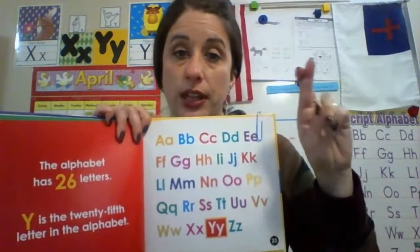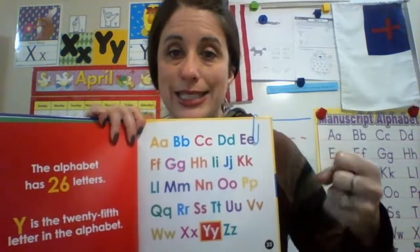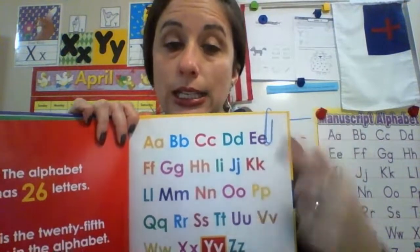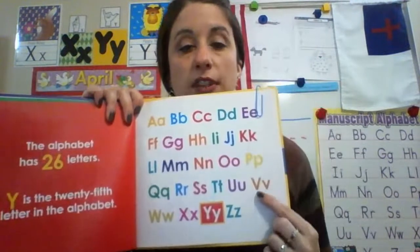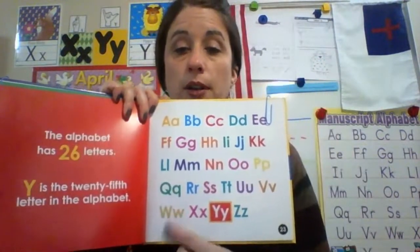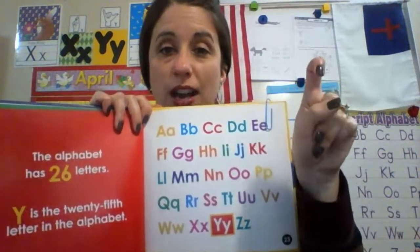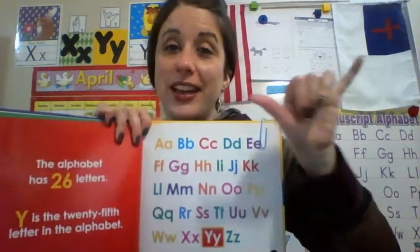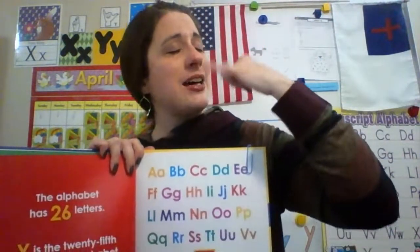R — the letter R, rrr rrr rrr. S — the letter S, sss sss sss. T — the letter T, tuh tuh tuh. U — the letter U, uh uh uh. V — the letter V, vvv vvv vvv. W — the letter W, wuh wuh wuh. X — the letter X, ks ks ks. We learned that one yesterday. And today is Y — the letter Y, yuh yuh yuh, like you're yawning. Yuh yuh yuh. Nicely done, friends!